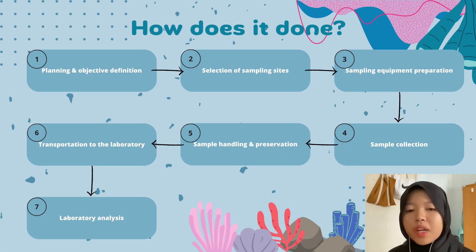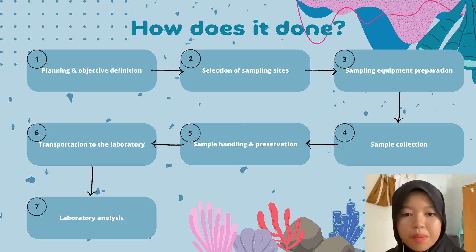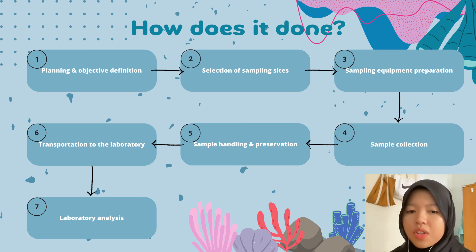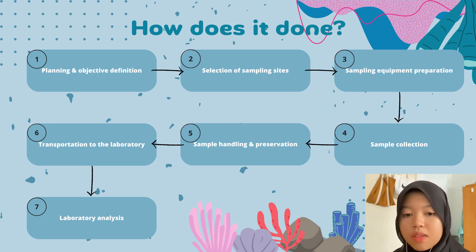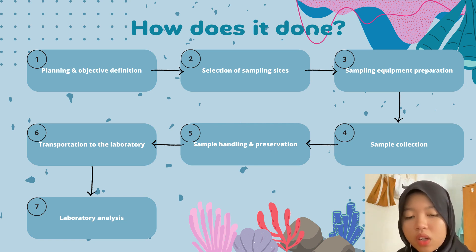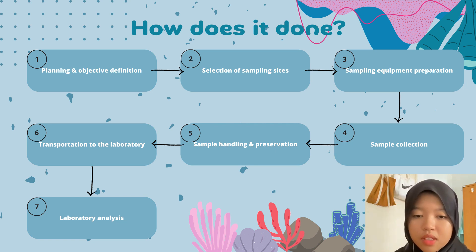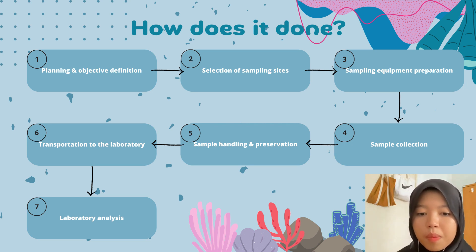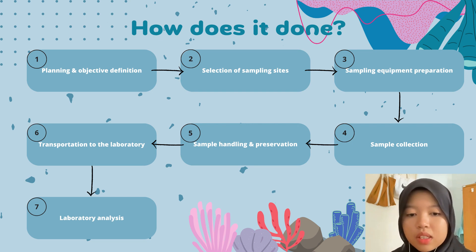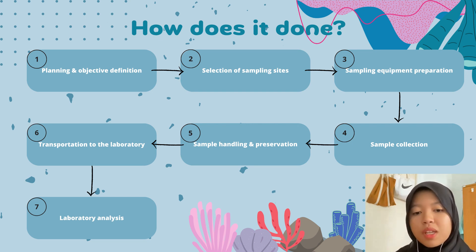We will now explain the methods of water sampling. Number one: planning and objective definition. Before starting the sampling process, it is essential to define the objectives of the sampling campaign. The purpose could be assessing water quality, monitoring pollutant levels, investigating the presence of specific contaminants, or studying ecological parameters. Proper planning helps determine the right location, sampling frequency, and parameters to be analyzed.